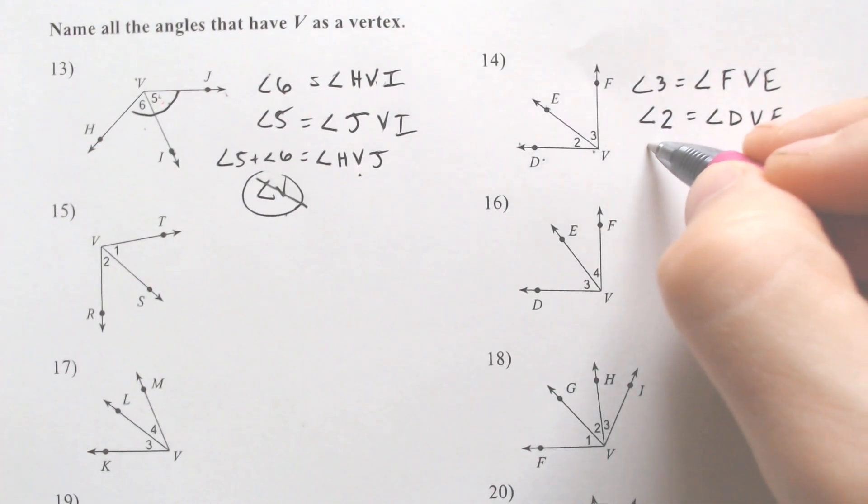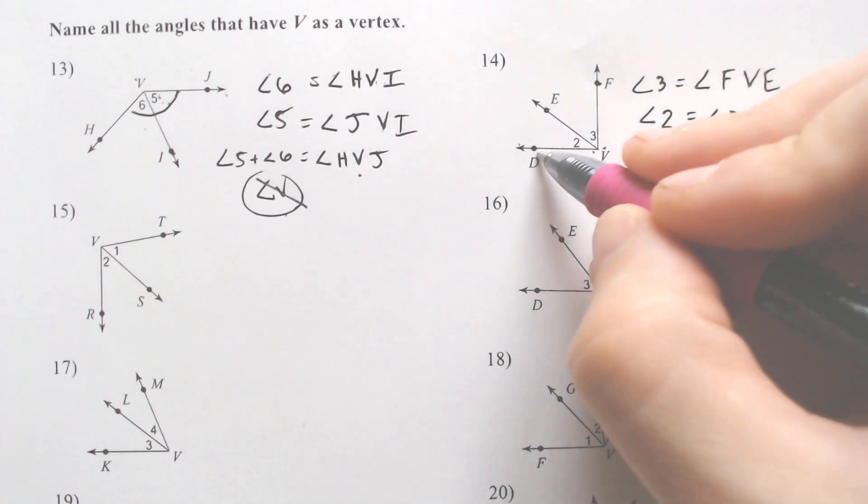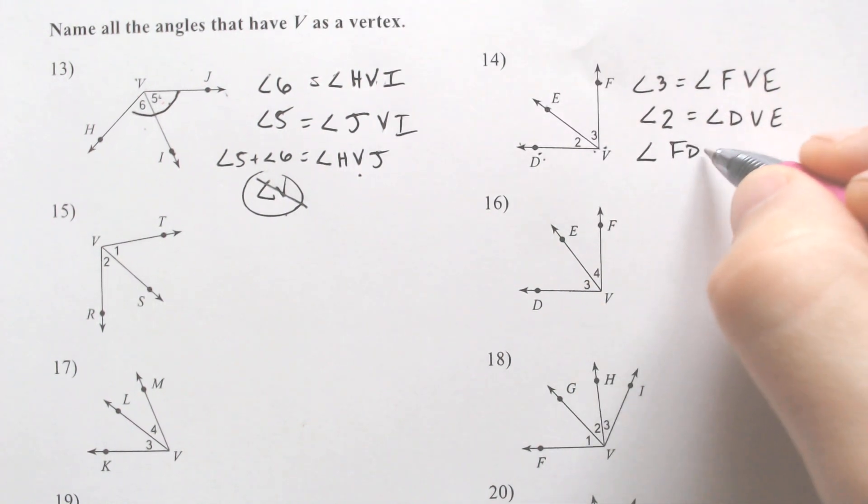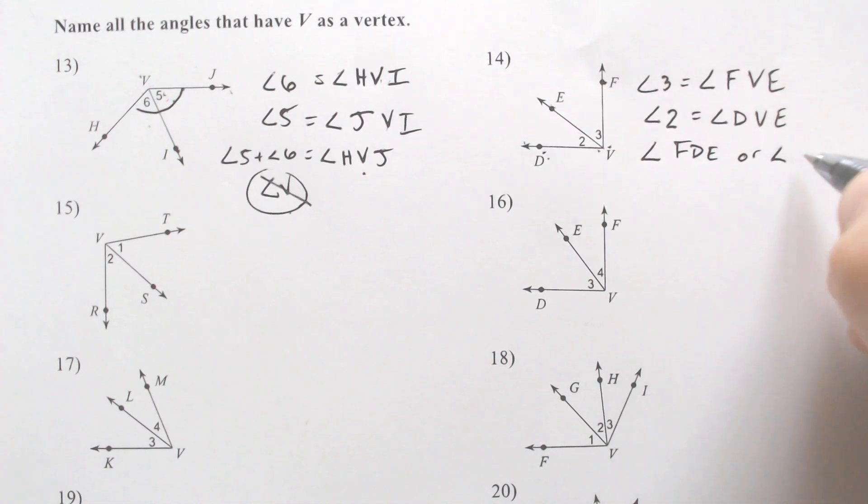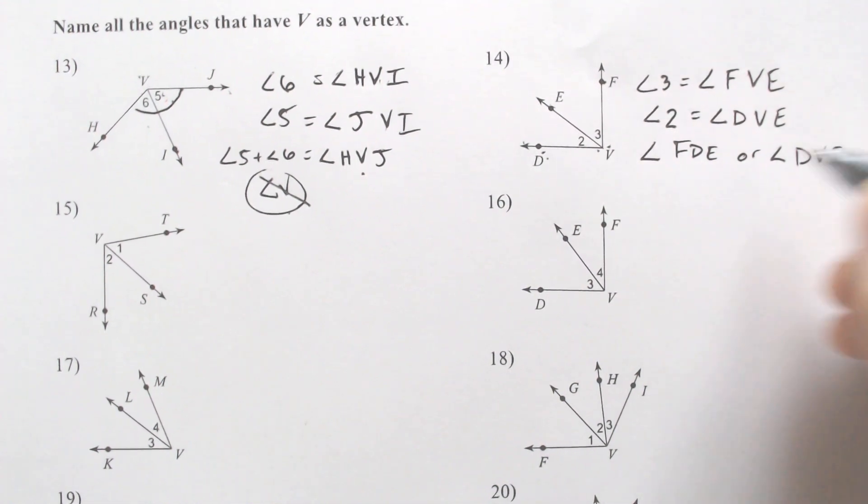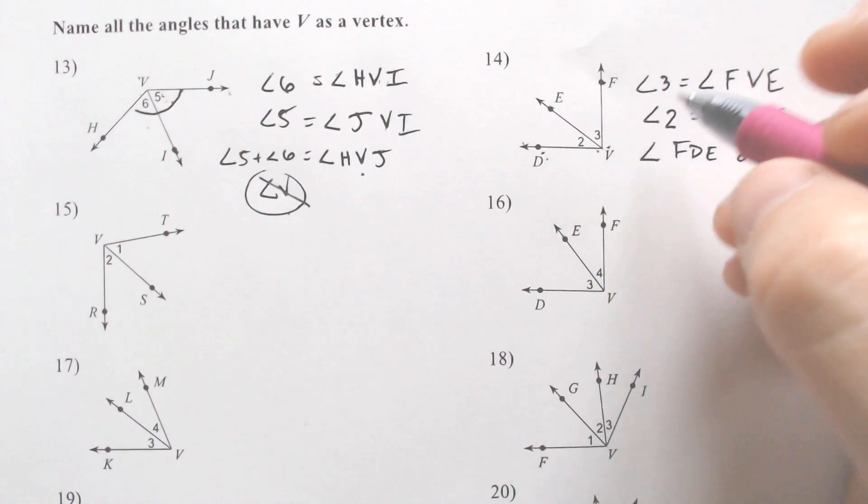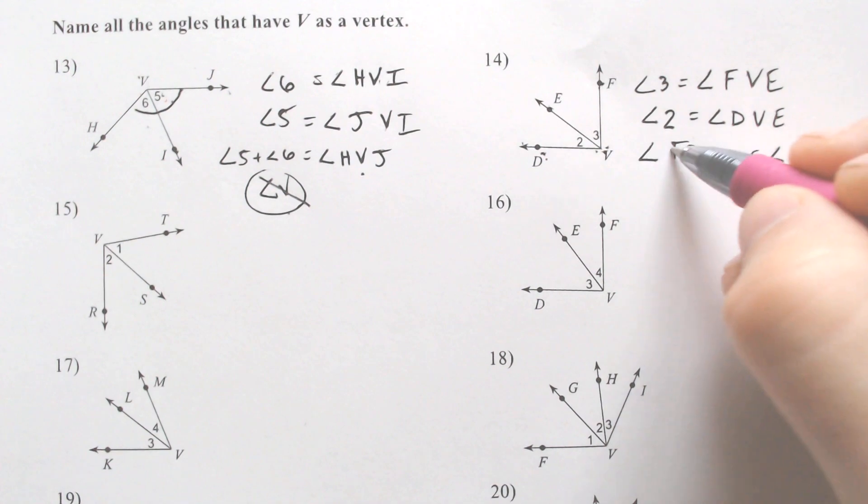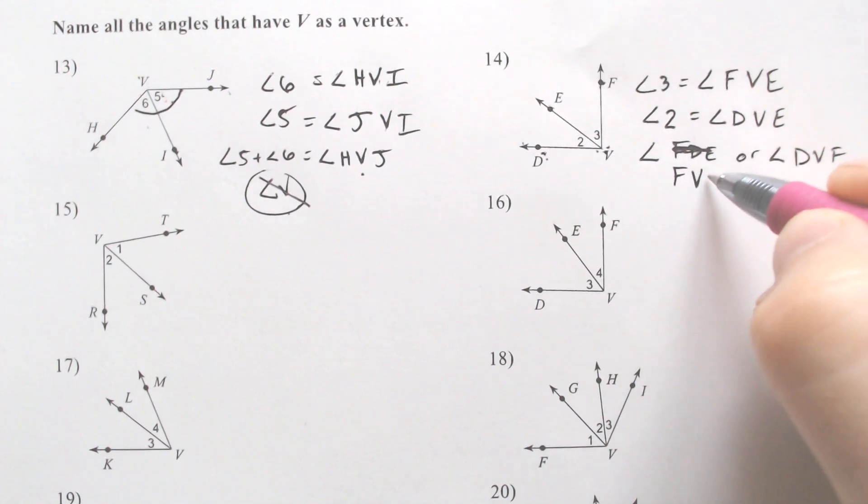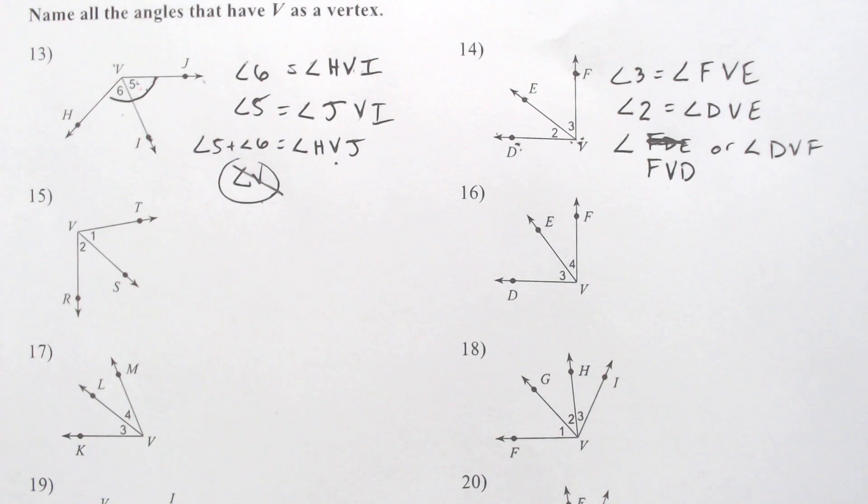And lastly, you can do the entire angle. The entire angle would be angle F V D or angle D V F. Oh, my gosh. I said D instead of—wow. I can't read it all. F V D. Making sure V is in the middle. See, sometimes you can just mess up by reading wrong.